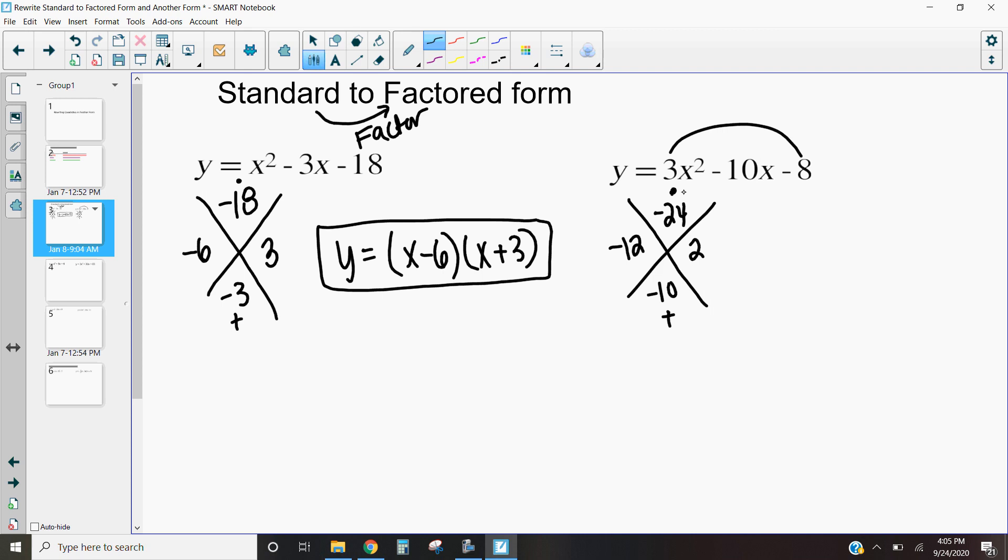But I'm not going to stop there. Because I had to multiply these by 3, I actually have to divide both of these by 3 as well. And this is going to simplify down to negative 4, and this is going to stay as 2 thirds.